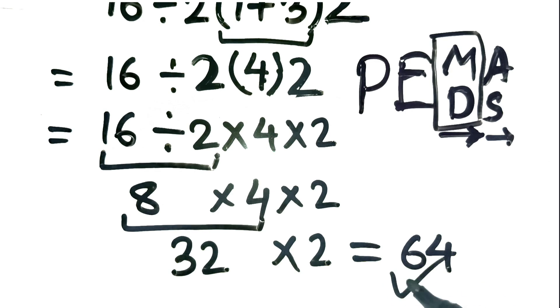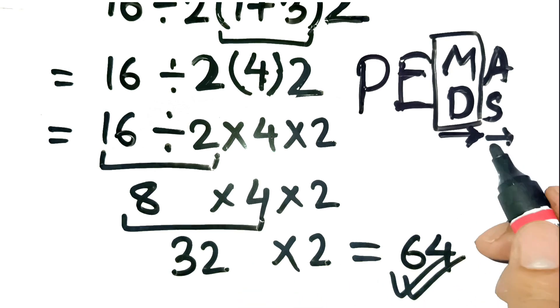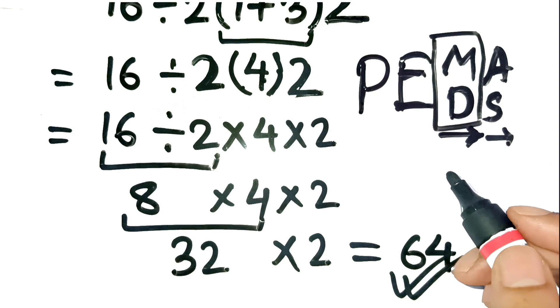So the correct answer is 64, not 1. Surprising, right? That tiny left to right detail completely flips the answer.